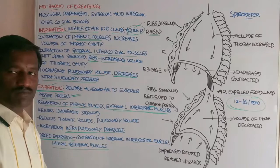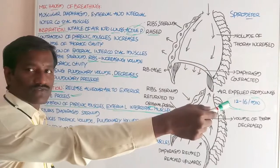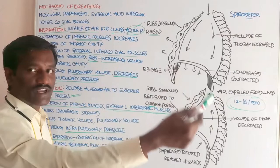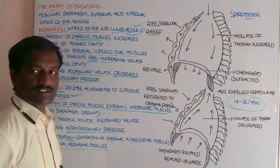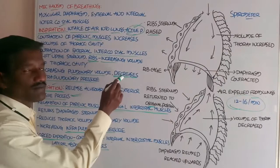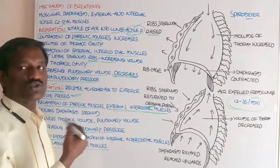At the same time, the intrapulmonary pressure decreases below the outer atmospheric pressure. So the air present in the outer atmosphere enters into the lungs through the respiratory tract. This is called inspiration.